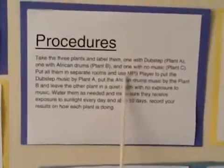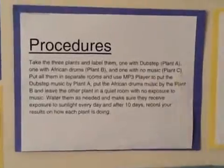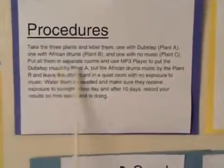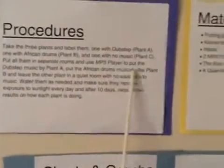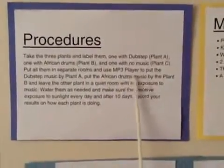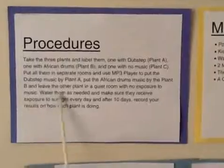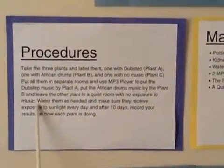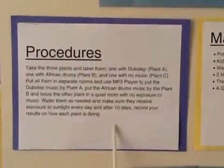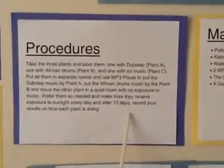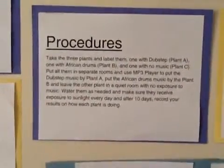Our procedures were: take three plants and label them — plant A with dubstep, plant B with African drums, and plant C with no music. Put all of them in separate rooms and use MP3 players to put the dubstep music by plant A, the African drums by plant B, and leave the other plant in a quiet room with no exposure to music. Water them as needed, make sure they receive sunlight every day, and after 10 days record your results on how each plant is doing.